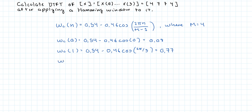w(2) is 0.54 minus 0.46 cosine of 4π over 3, and that is also equal to 0.77.